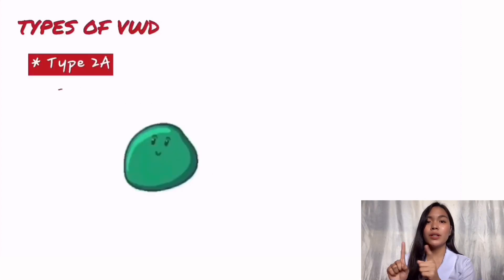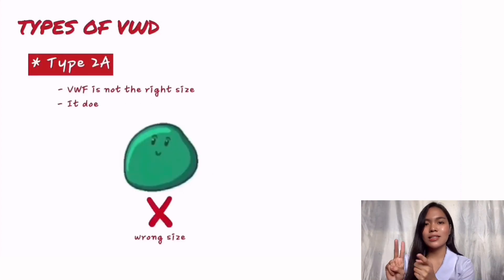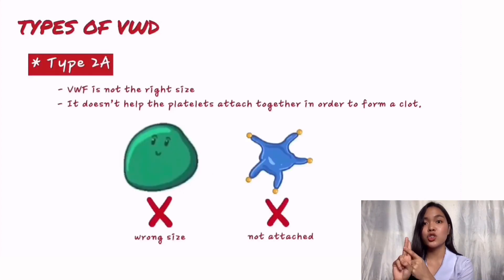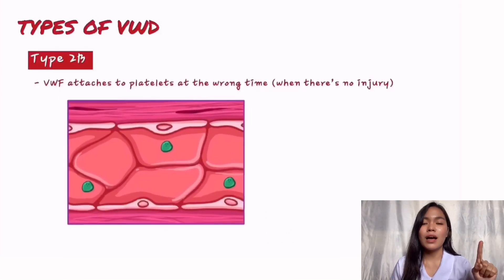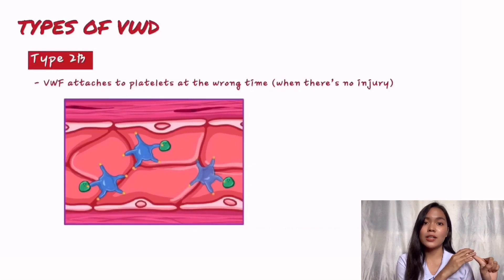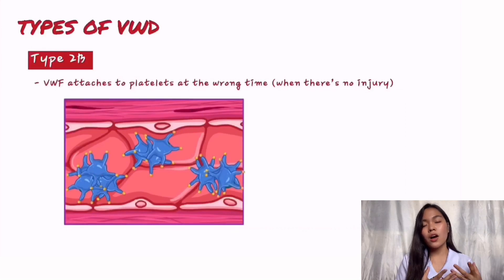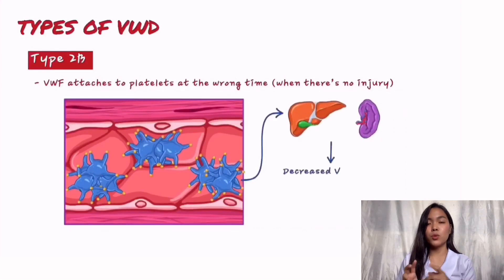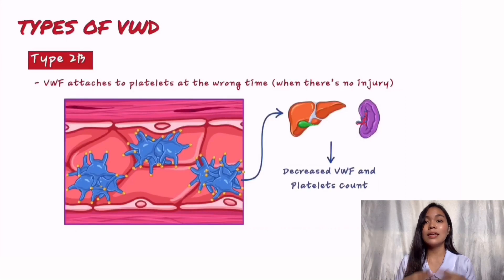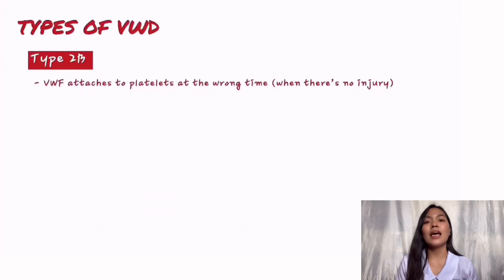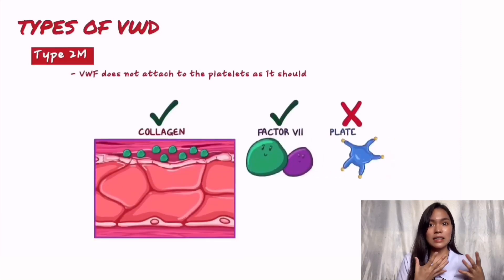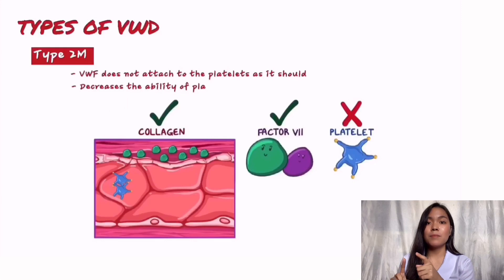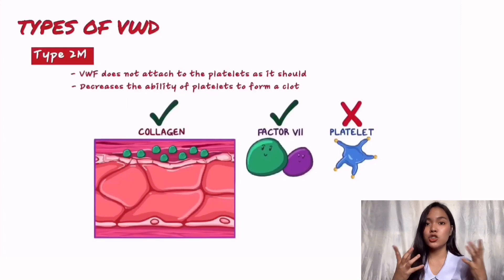In type 2A, the von Willebrand factor is not the right size and doesn't help platelets attach together to form a clot. In type 2B, the von Willebrand factor attaches to platelets at the wrong time; the body removes those platelets, causing a reduced amount of both platelets and von Willebrand factor in the blood when needed to form a clot. In type 2M, the von Willebrand factor does not attach to the platelets as it should, which decreases the platelets' ability to form a clot when an injury occurs.